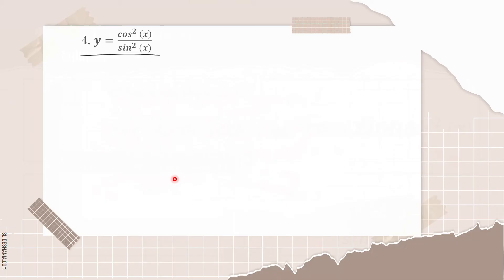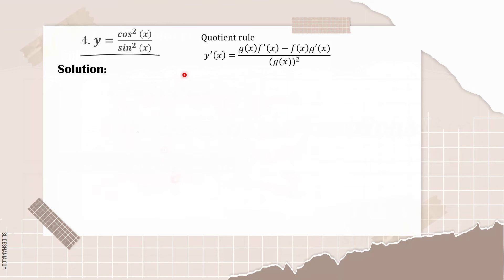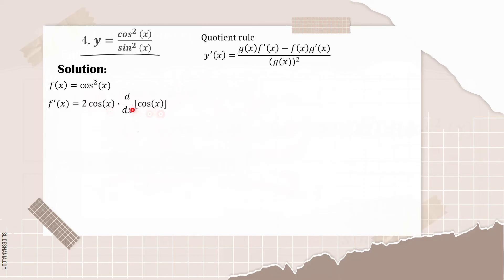Now let's solve our last given, which is y equal to cosine squared of x all over sine squared of x. Since our given is a division, we need to use the quotient rule: y prime of x equals g of x times f prime of x, minus f of x times g prime of x, all over g of x quantity squared. We need to find first the derivative of f of x, which is our numerator, cosine squared of x. Using the power rule, the derivative of cosine squared is 2 cosine times the derivative of cosine of x, and the derivative of cosine of x is negative sine of x. Multiplying gives us f prime of x equals negative 2 cosine of x times sine of x.